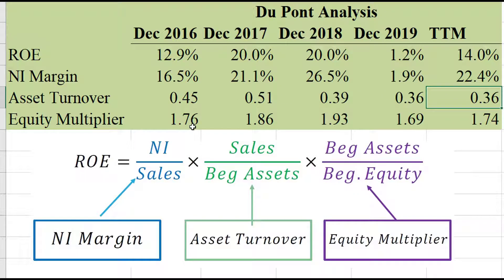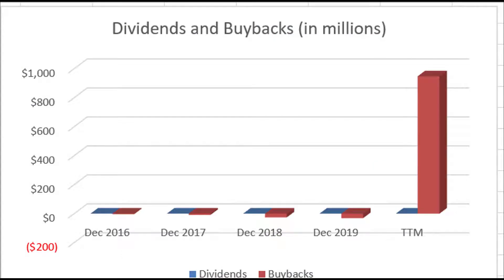The equity multiplier is where they could really improve their ROE. I would love to see this company borrow more money, especially with rates so low right now. Much like Google, this company does not pay any dividends yet. They have not even spent any money buying their own shares back until the most recent year, where they bought a lot back.